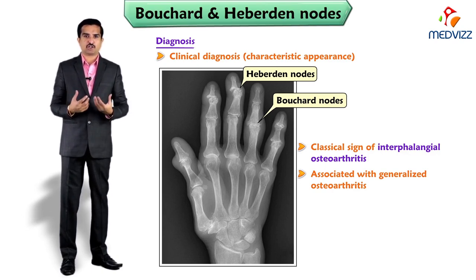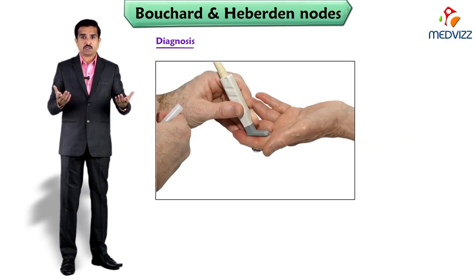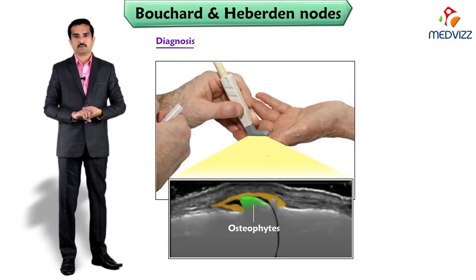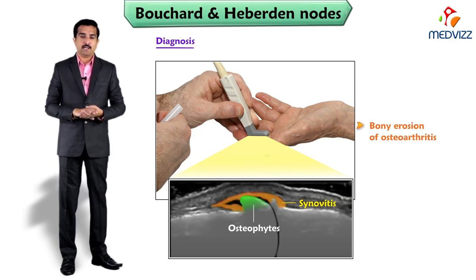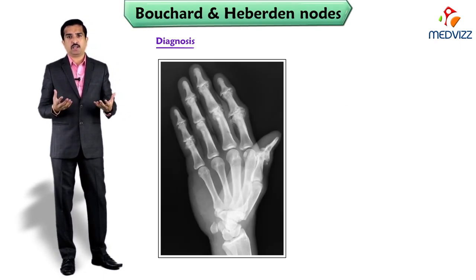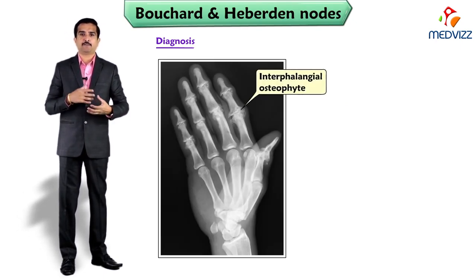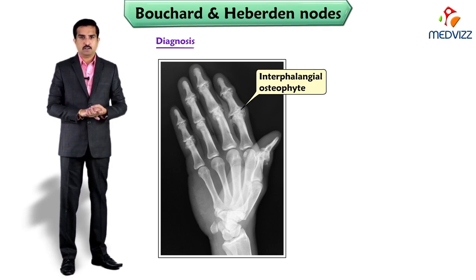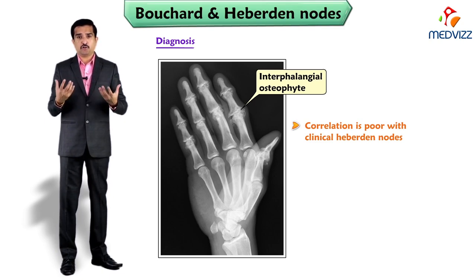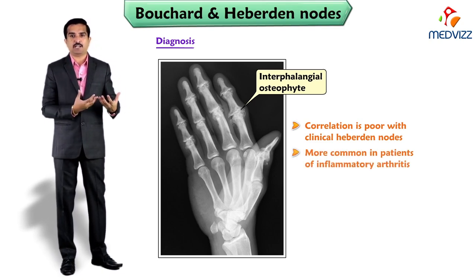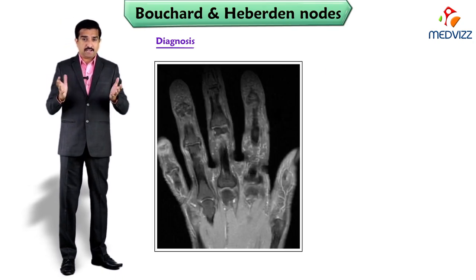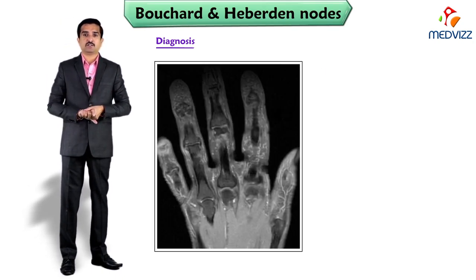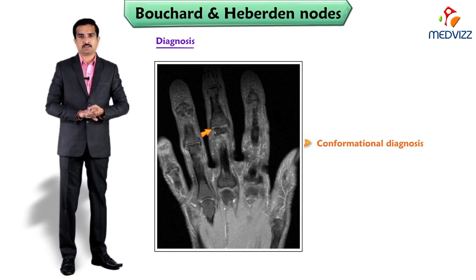To diagnose such conditions: ultrasound scanning reveals osteophytes, synovitis, and bony erosion of osteoarthritis. A plain X-ray of the affected joint may show interphalangeal osteophytes, although correlation is poor with clinical Heberden nodes, and osteophytes are more common in patients with inflammatory arthritis. Magnetic resonance imaging is considered the confirmation of the diagnosis of arthritis in the affected digit.